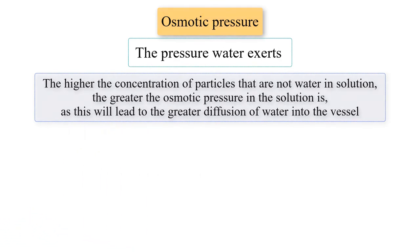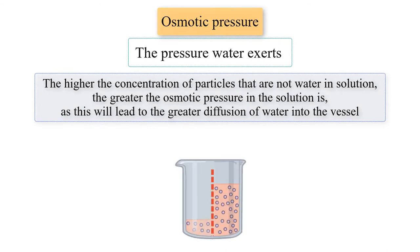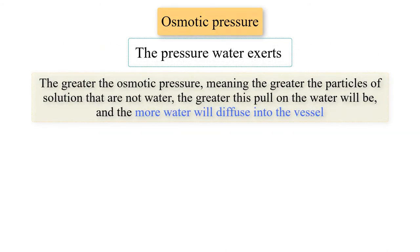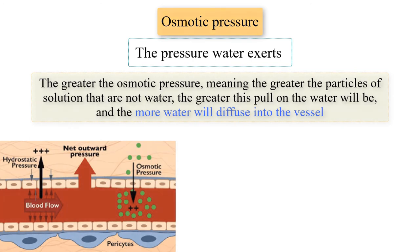This is often spoken of as if the particles in solution that are not water are exerting a pull on the water to draw it into the solution. The greater the osmotic pressure — meaning the greater the concentration of non-water particles — the greater this pull on the water will be, and the more water will diffuse into the vessel. Therefore, osmotic pressure can be viewed as a measure of how much osmosis will take place due to how many particles in a solution are not water.